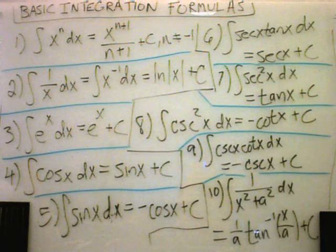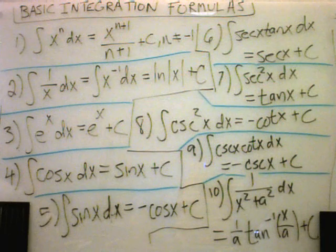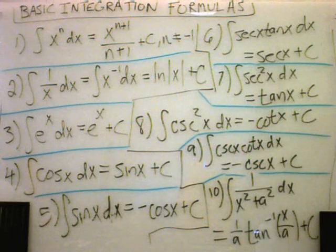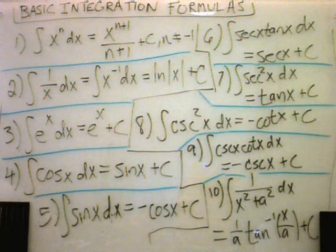Number 6 says if you integrate secant x tangent x, you get secant x. Number 7 says if you integrate secant squared, you get tangent of x.